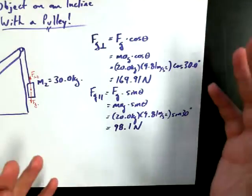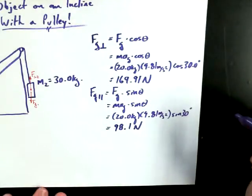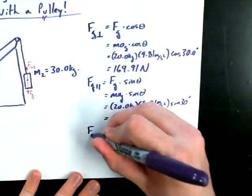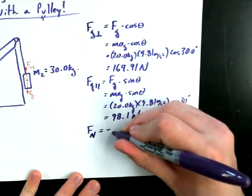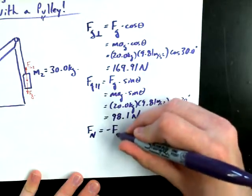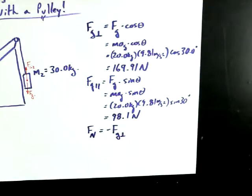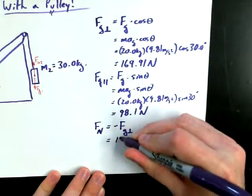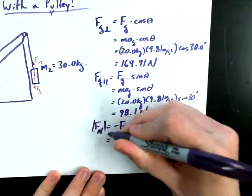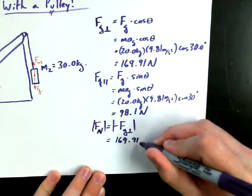Now the recommendation was to find F normal. In this case, we're just going to recognize that F normal is equal but opposite in magnitude to FG perpendicular. It's just because we are looking at this scenario and observing that this is the case. There's no extra applied forces here. So we say F normal is going to be equal to 169.91 newtons.